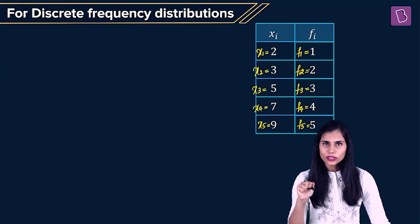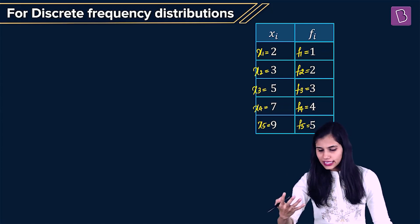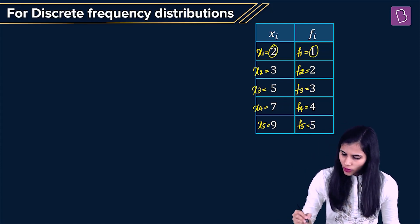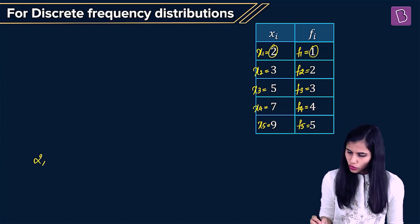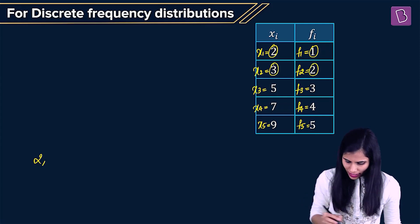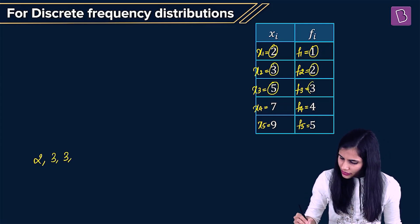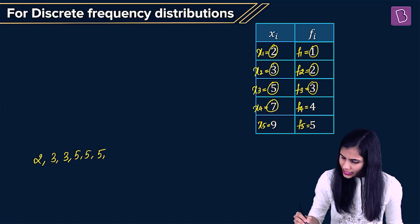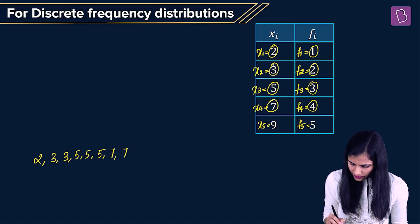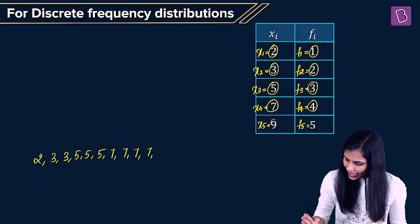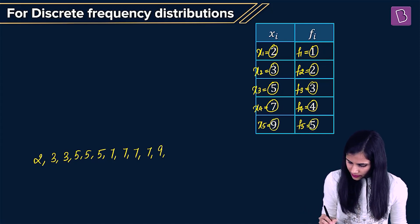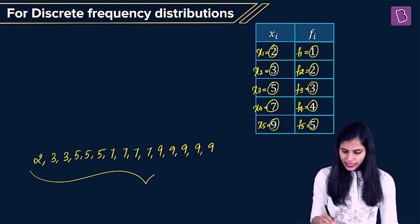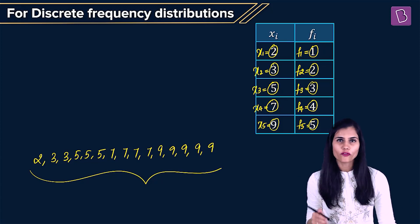If you interpret the language of this data set, it is saying: 2 is occurring once in the data set, 3 is occurring twice, 5 is occurring thrice, 7 is occurring 4 times, and 9 is occurring 5 times. So explicitly, this is the data set in raw format.